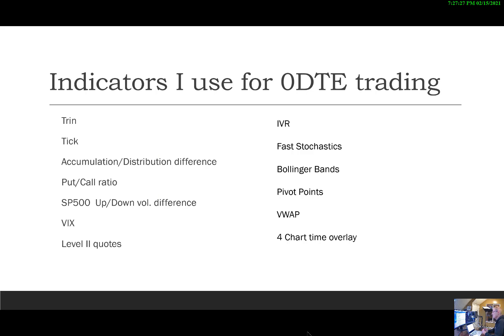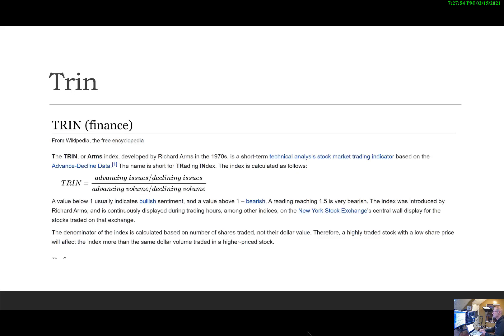There are about 13 indicators that I use: the TRIN, the Tick, the Accumulation Distribution difference, the Put-Call ratio, the S&P 500 up and down volume difference, the VIX, Level Two quotes, Implied Volatility Ranking, Fast Stochastics, Bollinger Bands, Pivot Points, the VWAP — the Volume Weighted Average Price — and then a four-chart time overlay. Let's take a look at each one individually and walk through them.